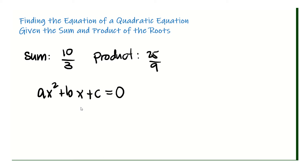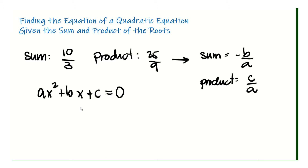So how do we find the equation knowing the sum and the product of the roots? We have to go back to the idea that the sum can be obtained through negative b over a. That's the formula for the sum of the roots, and the product is obtained through c over a. Since it is given that the sum is 10 over 3, negative b over a is equal to 10 over 3, and c over a is 25 over 9.